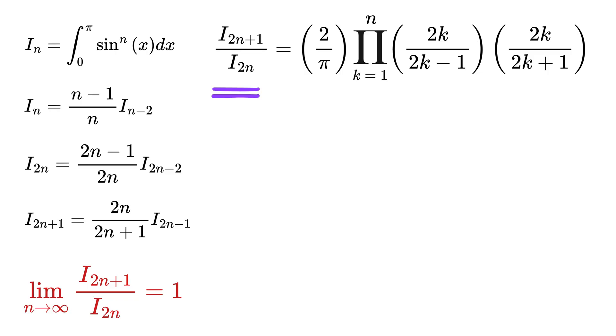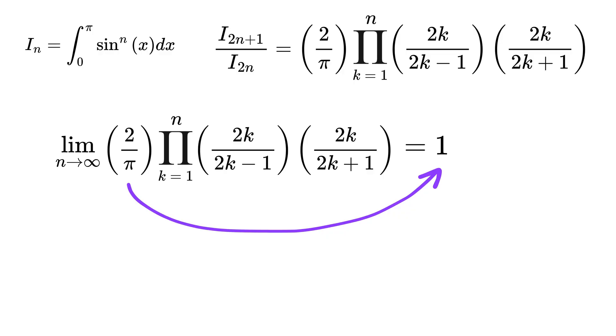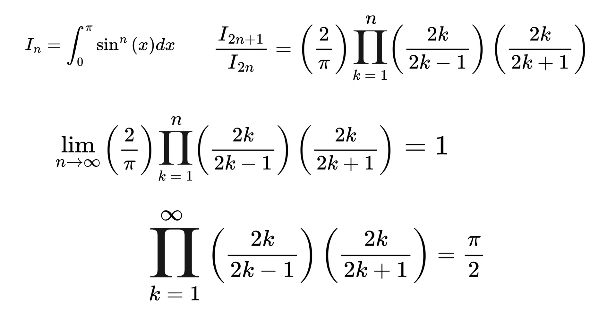Oh my god, look here! This is the same ratio that we need, and thus substitute it here to get this. Finally, take this 2/pi to this side to get the product of (2k)/(2k-1) times (2k)/(2k+1) as k goes from 1 to n and n approaches infinity equals pi/2. And that's it!